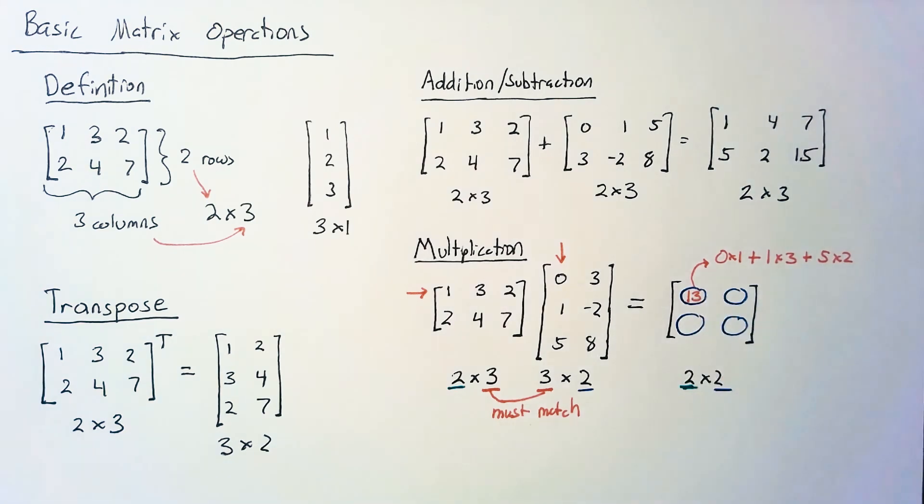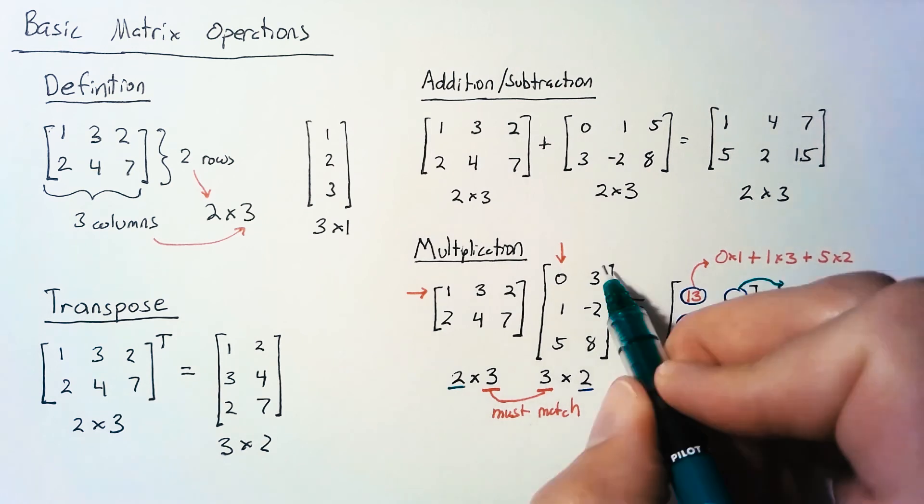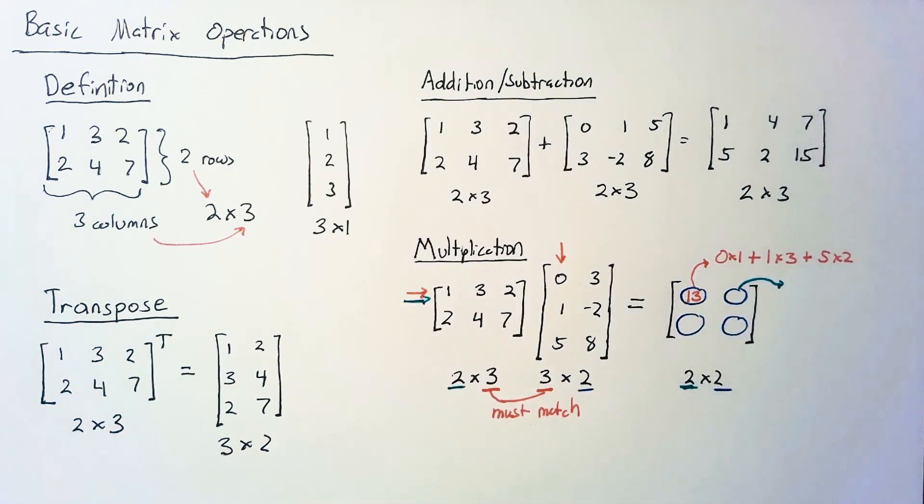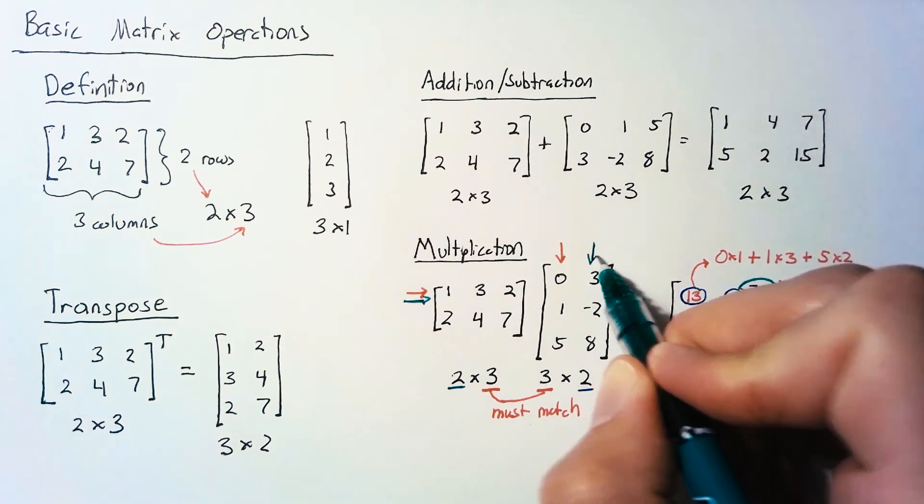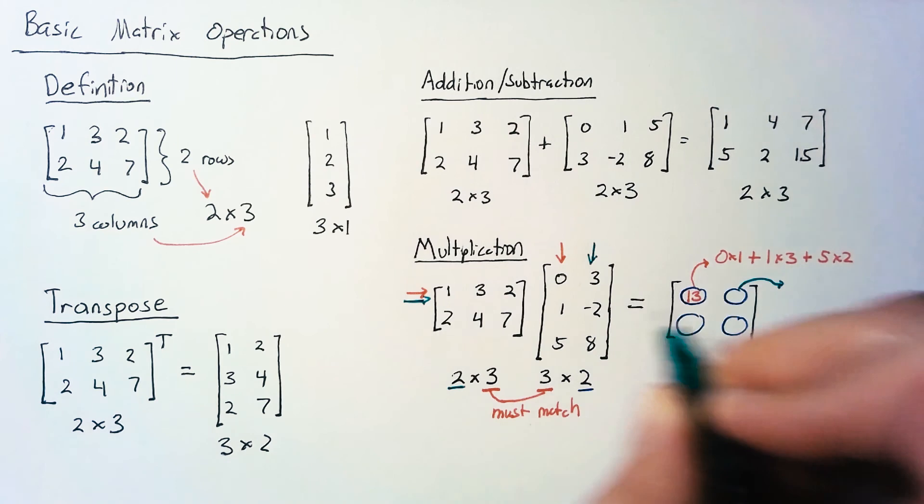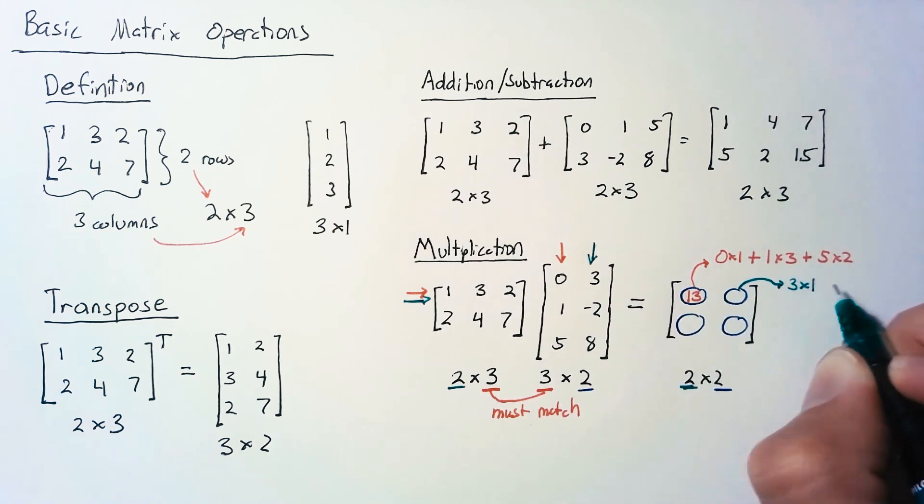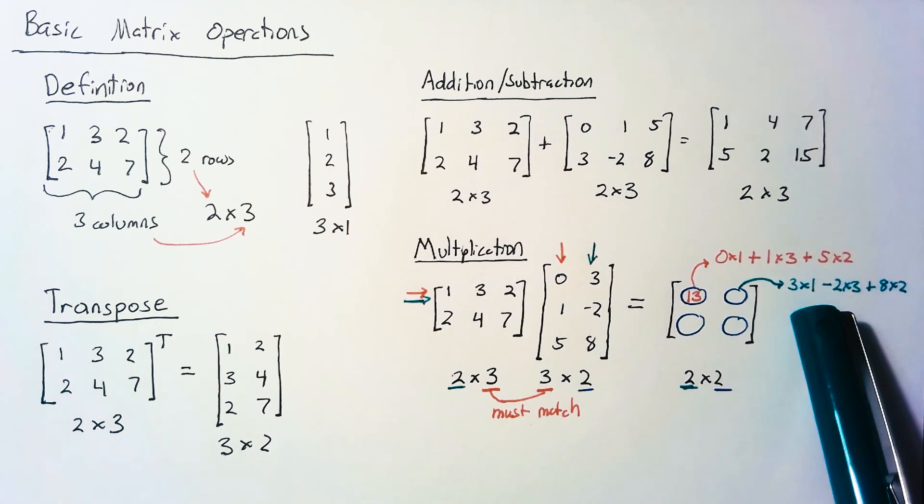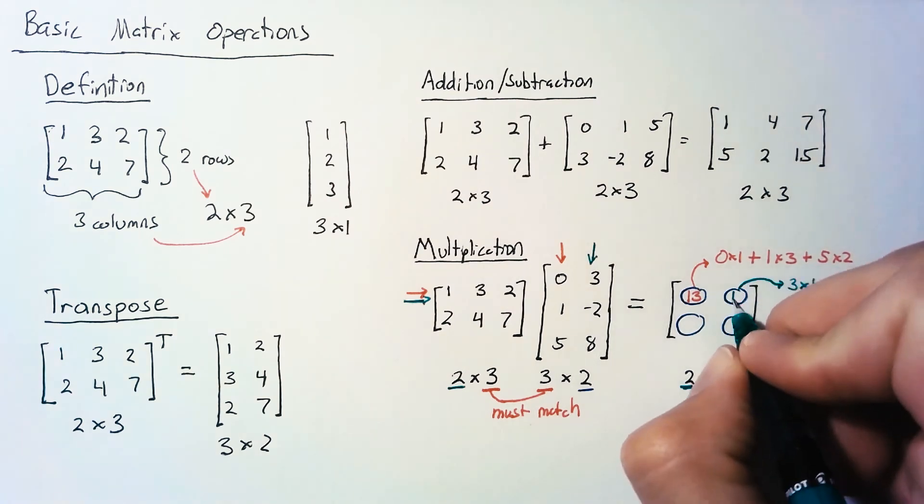For the next element, we're still in the first row but now the second column. We look at the second column of our second matrix. We end up with 3×1 minus 2×3 plus 2×8 plus 8×2. So 16-6=10 plus 3=13, and we end up with 13 again.